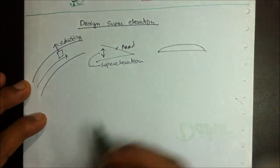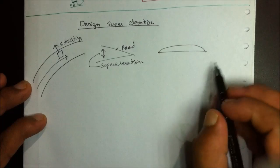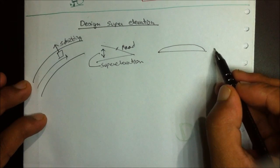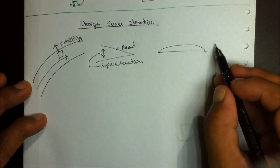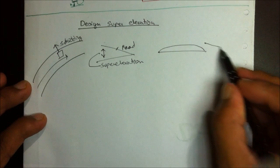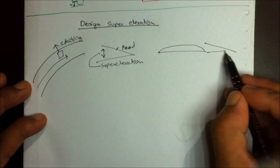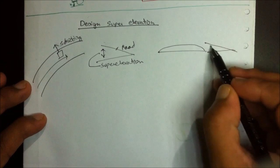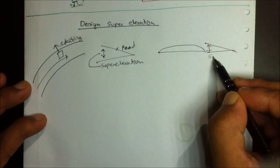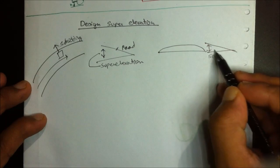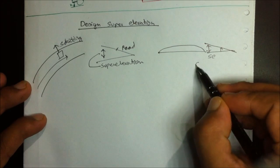Our road is normally provided as a camber, like this one, but in cases of super-speed highways or where we need to carve out curves, we provide an extra elevated height to the highway. This extra elevation is known as super elevation (SE), also known as cant or banking.